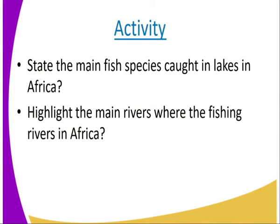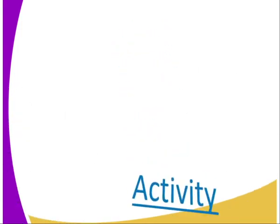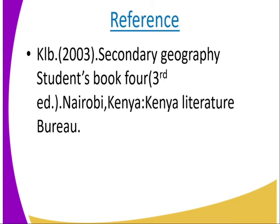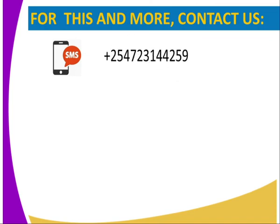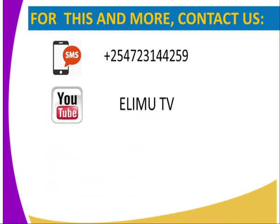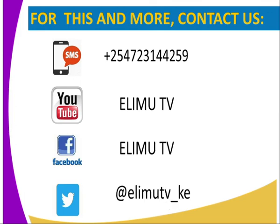The activity for today: state the main fish species caught in lakes in Africa, and highlight the main rivers where fishing is done in Africa. For more information, visit the KRB 2003 Secondary Geography student book, third edition. You can also contact us via SMS, YouTube, Facebook, or Twitter. Stay tuned to ERIM TV. Thank you.